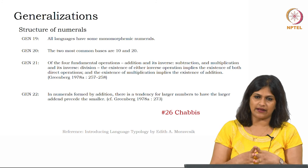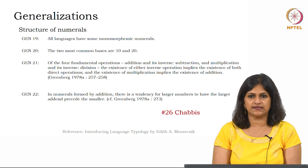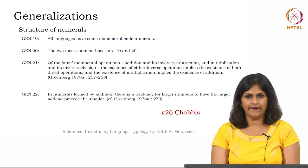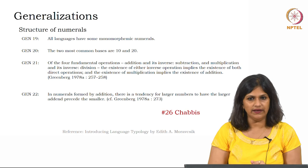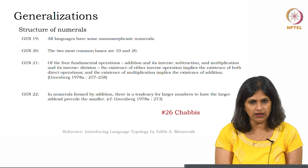If a certain language has multiplication, then it will surely also have addition — without addition, multiplication is not possible. There could be a language with addition but no multiplication, but multiplication without addition is not possible. All of these generalizations come from Greenberg, 1978.